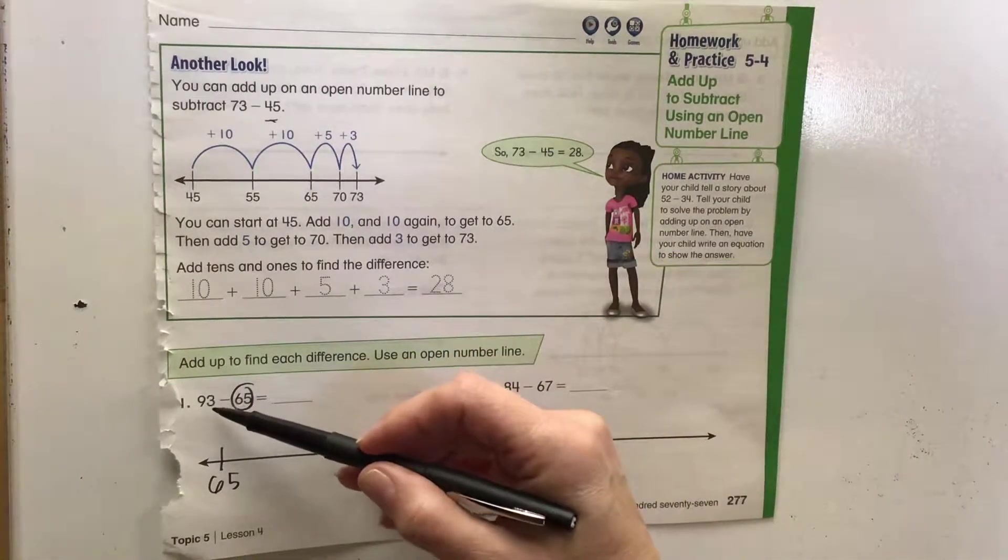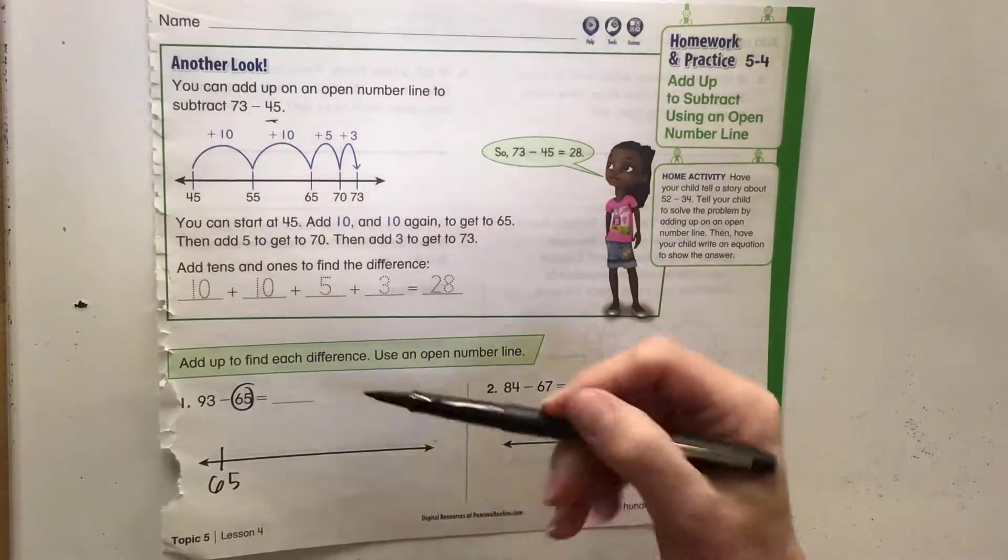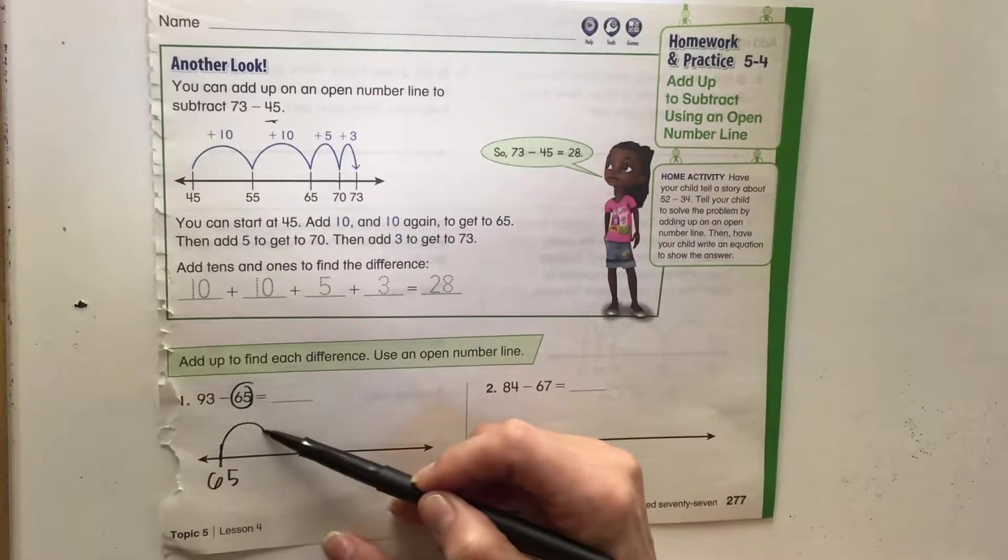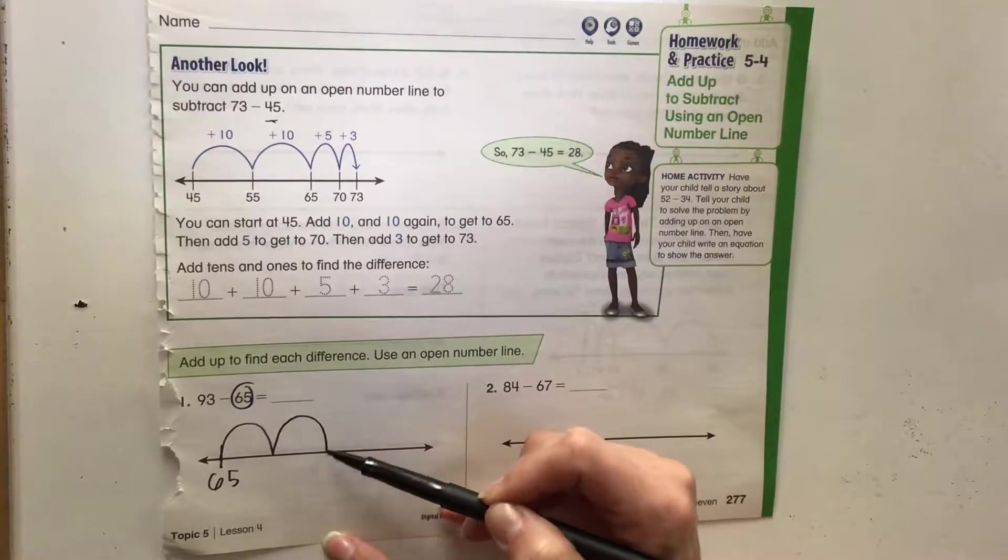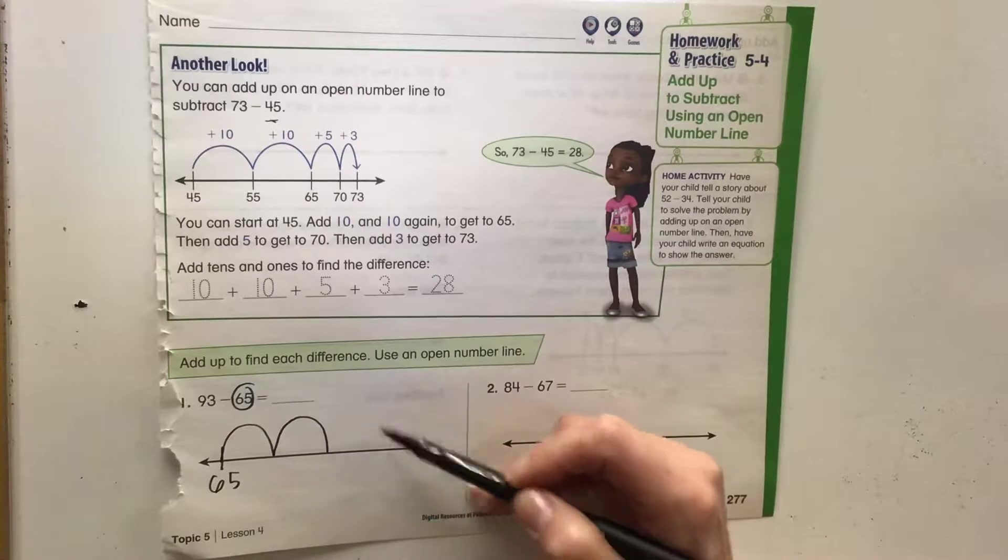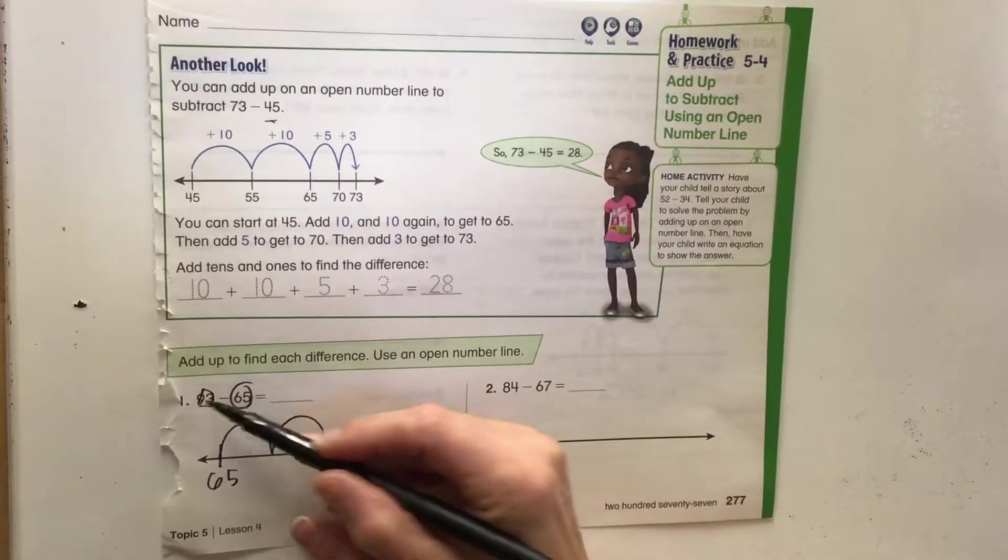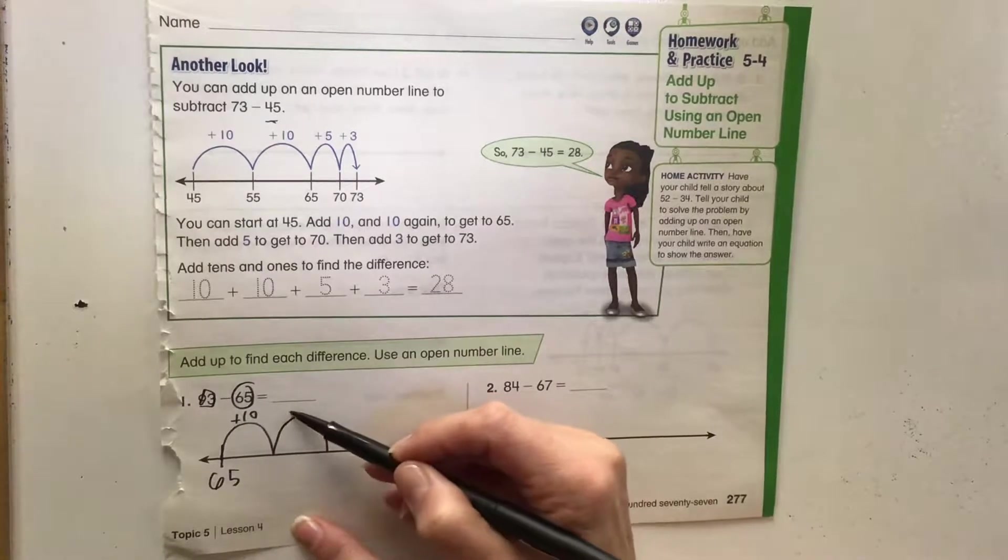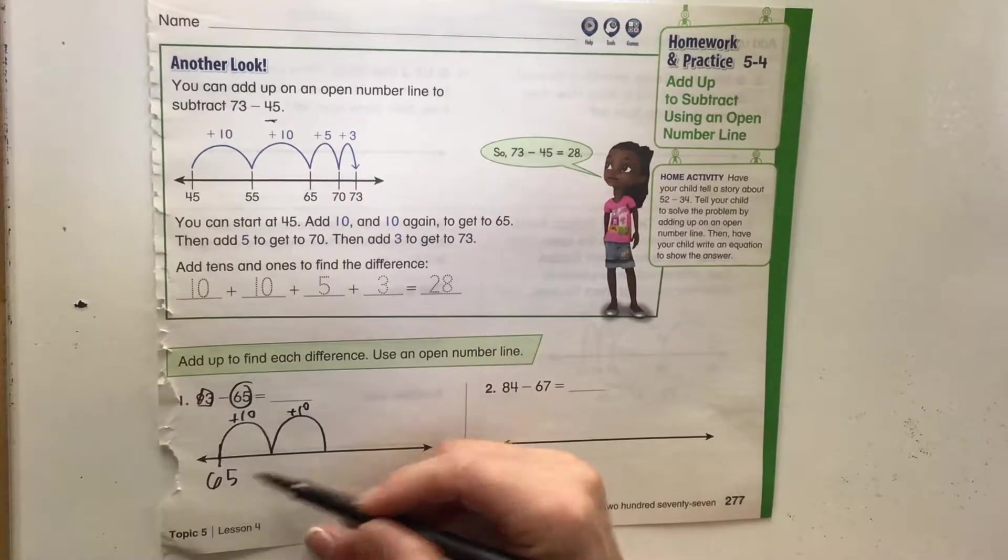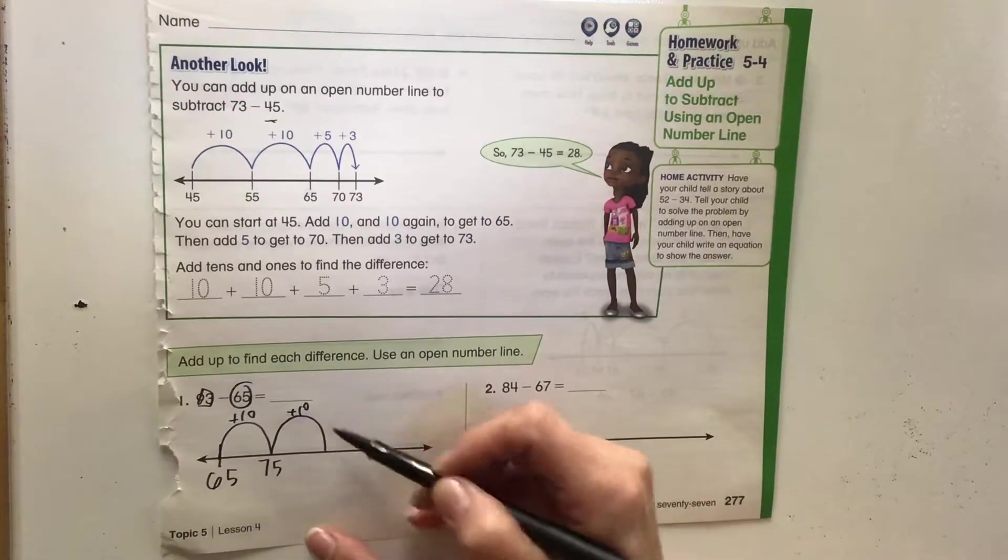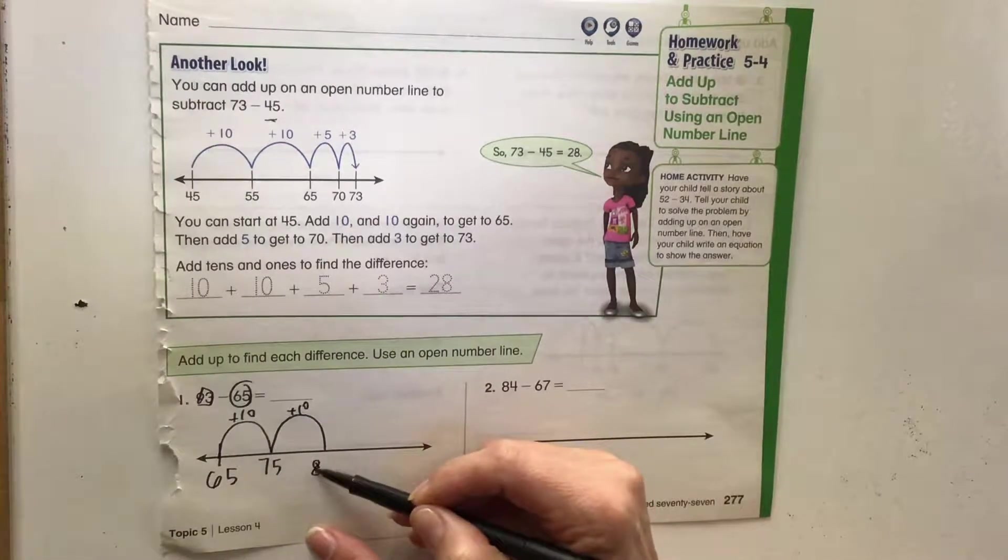We're just going to start doing some hops to see how far we can get. We don't want to go past 93. So we have 65, we can go 75, 85. Now if we do another one, that'll put us at 95, that is too high. So we'll add 10 here and 10 here. 65 plus 10 is 75 plus 10 is 85.